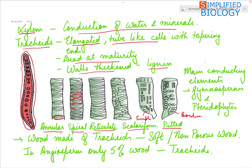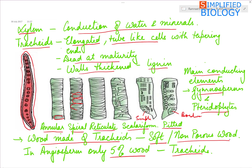Tracheids are the main conducting elements in gymnosperms and pteridophytes. While in angiosperms, only five percent of the wood consists of tracheids. Wood made up of tracheids is referred to as softwood or non-porous wood.